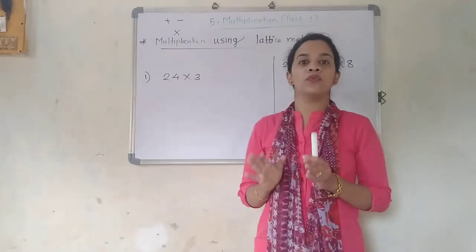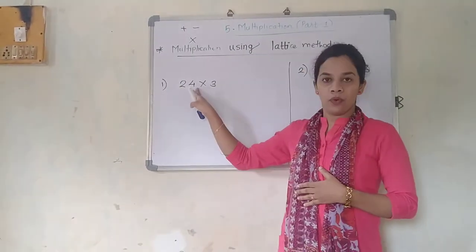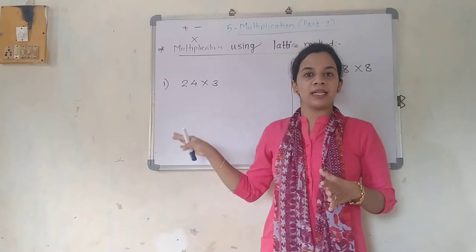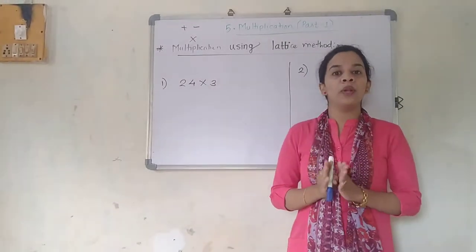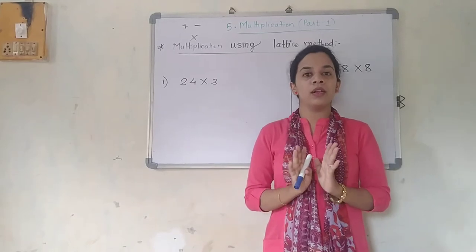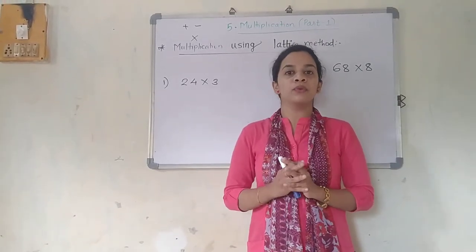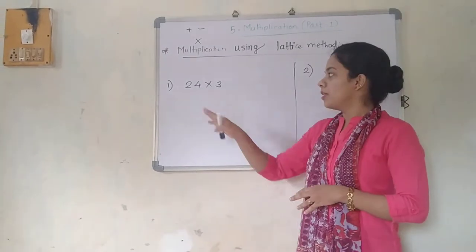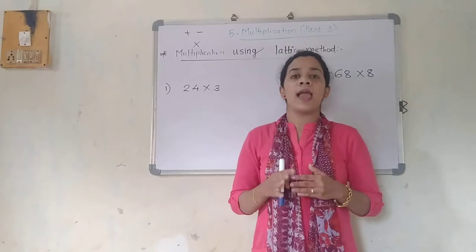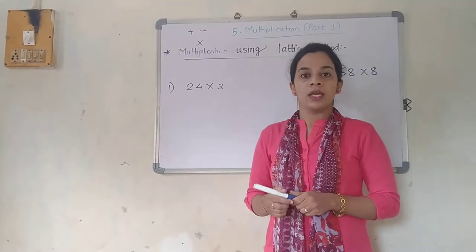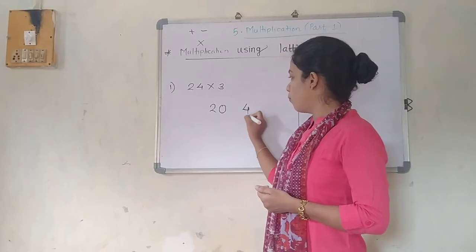Now what exactly the lattice method is, we are going to study now. Just focus: 24 is present in terms of tens and units; 3 is in the unit place, a single digit number. So how are we going to solve it? Now, 24 — how can I express 24 in expanded form? Expanded form: 24 can be written as 20 and 4.